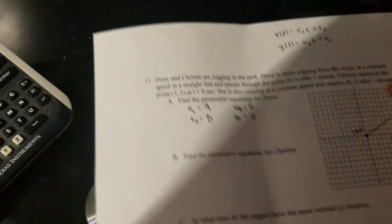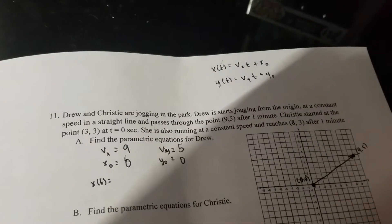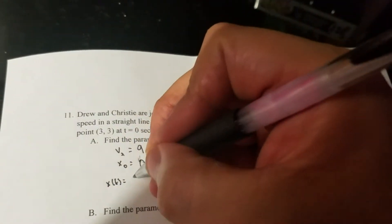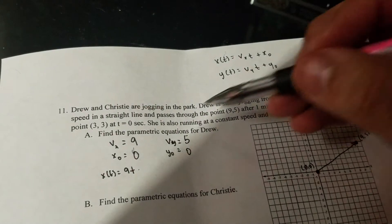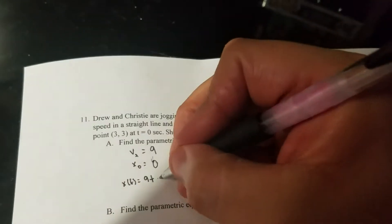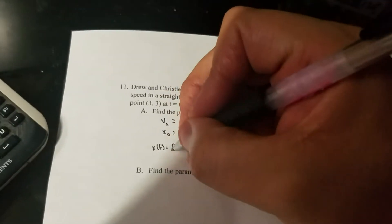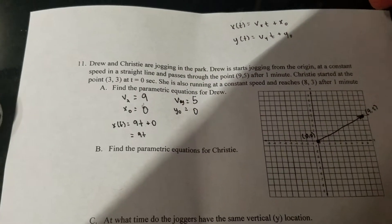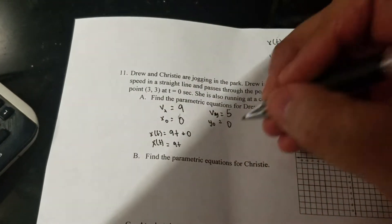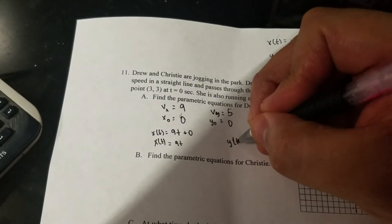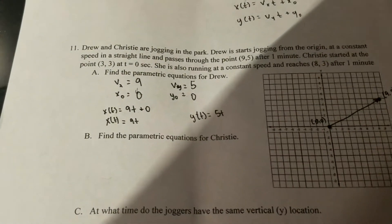So my x equation, following this vx I already know vx is nine, so nine t plus x initial which is zero so I don't have to put it. I'm just gonna write it like this guys 9t, I'm not gonna put the plus zero. And for the y of t it is five t again plus zero, but I'm not gonna write the plus zero part.